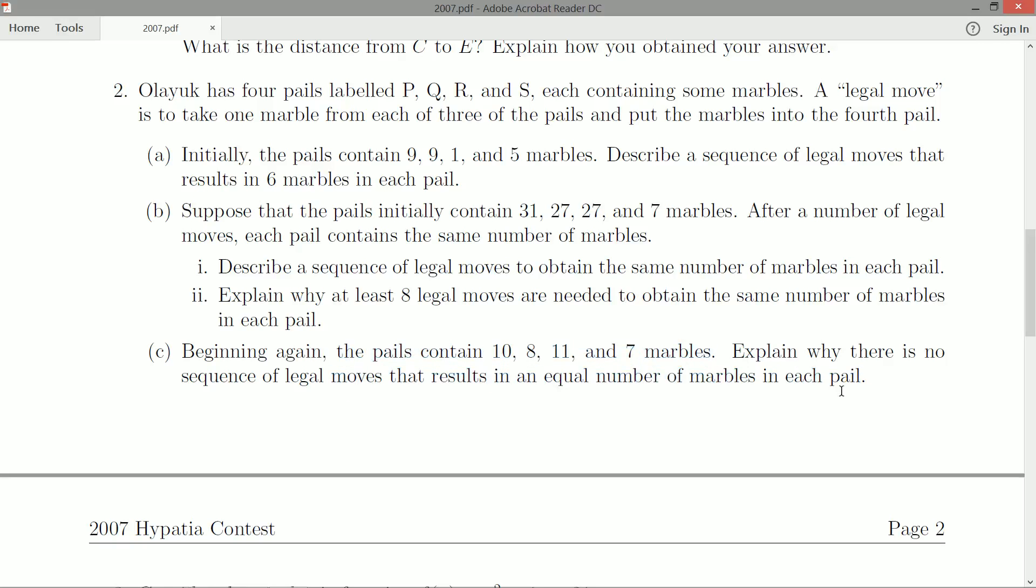Now, for people who have seen this before, you probably know why. But we don't actually care what the even number would be. So 10 plus 8, 18. 11 plus 7, 18. So you should be getting 9 in each pail if you can do it evenly. But that 9 is not what matters. We don't actually care about that number 9.